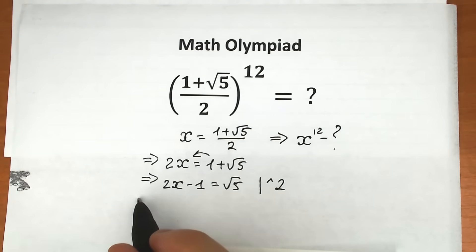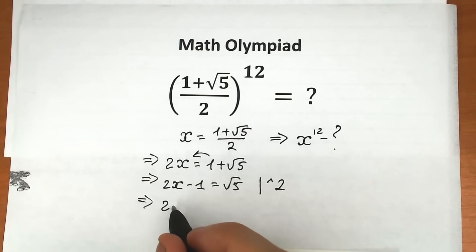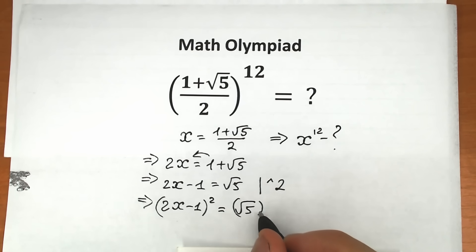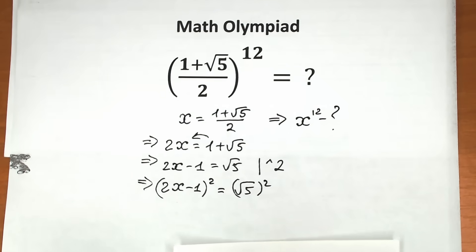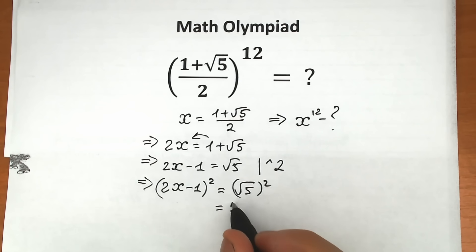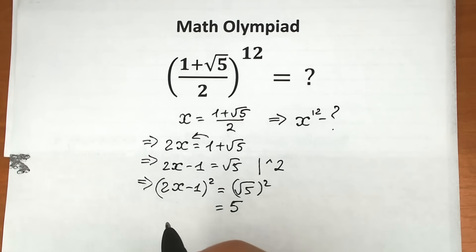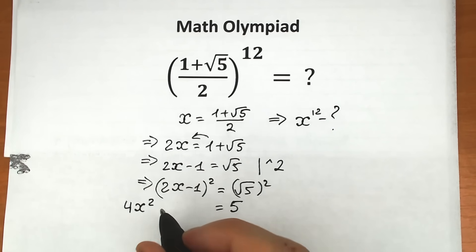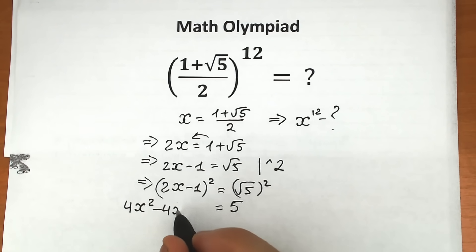We square (2x − 1) on the left and do the same on the right. So (√5)² = 5 on the right-hand side. On the left, using the classic formula, we get 4x² − 4x + 1 = 5.